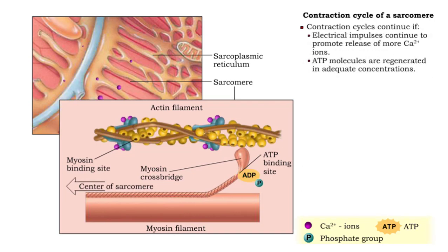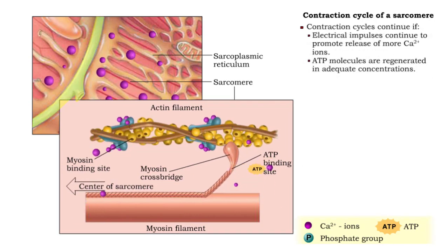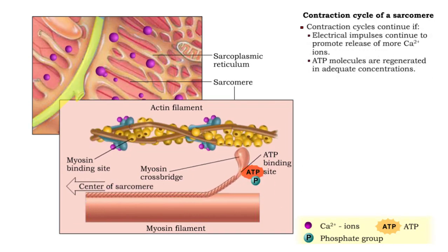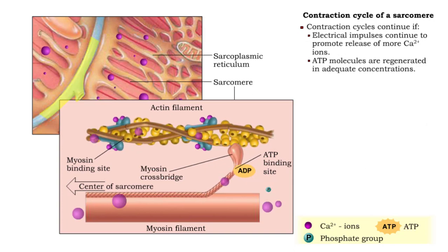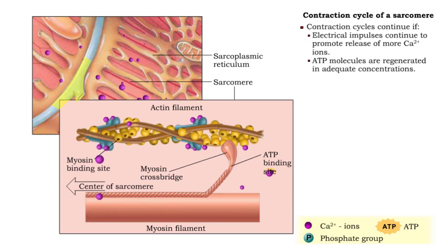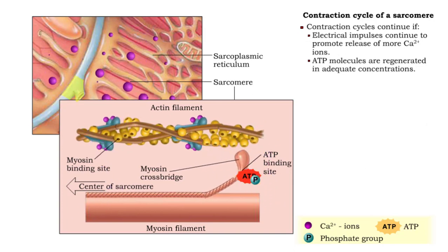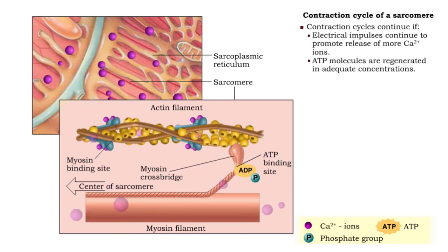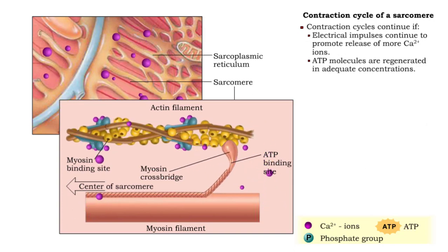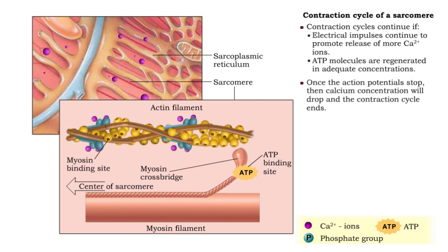This cycle continues as long as ATP hydrolysis continues and nervous impulses continue to reach the cell. Once the action potentials stop, calcium concentration will drop and the contraction cycle ends.